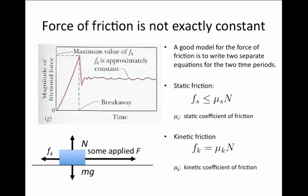We model this behavior with a set of equations that describe the macroscopic behavior of friction. At the macroscopic level we divide this process into two time periods. Before the object is moving — the static period — because the object is not yet moving, the force of friction is described by an inequality: its magnitude is less than or equal to the static coefficient of friction times the normal force. When it equals that value — not less than, but equal to — that describes the maximal value of the static force of friction.